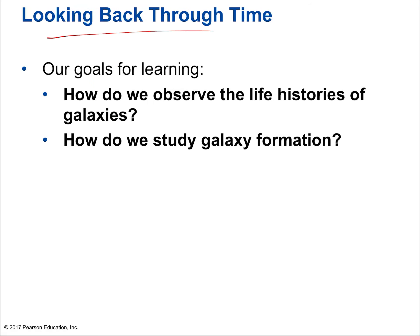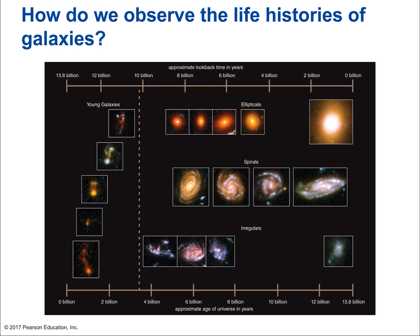Looking back through time, we observe the life history of galaxies. Galaxies further than 10 billion light years away are ones we're seeing more than 10 billion years ago — these are young galaxies, representing some of the first galaxies that formed in the universe, when it was less than 4 billion years old. These young galaxies are basically irregular galaxies — kind of their own category but falling most in line with the irregular class.